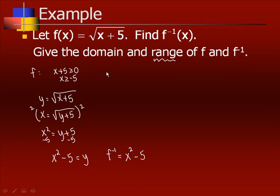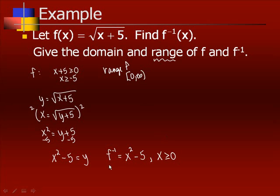The domain of f was x ≥ −5, and the range of f is [0, ∞) since square roots are always non-negative. The domain of f⁻¹ is the range of f, so f⁻¹(x) = x² − 5 with the restriction x ≥ 0. The range of f⁻¹: squaring any non-negative number gives a non-negative result, and subtracting 5 means the least value is −5, so the range of f⁻¹ is [−5, ∞), which matches the domain of f.